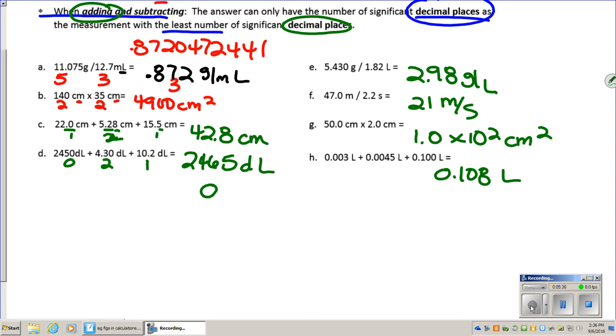By the way, the units for letter E are a unit of density, grams per liter. That's mass divided by volume, which is density, and that happens to be a unit of gaseous density. Usually we measure in milliliters if it's a liquid. Letter F is a rate or a speed, meters per second. Letter G is an area, centimeters squared, and letter H is a unit of volume. And remember that when we're adding, we use the number of decimal places. Letter H, the 0.003 has three decimal places, four decimal places, and then three. So our answer can only have three decimal places.